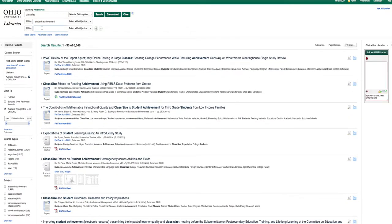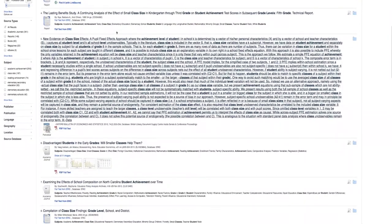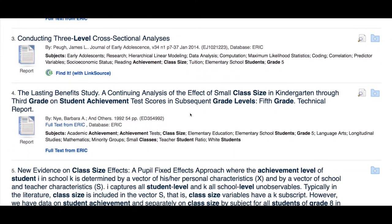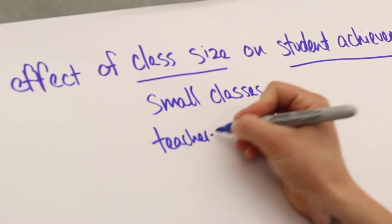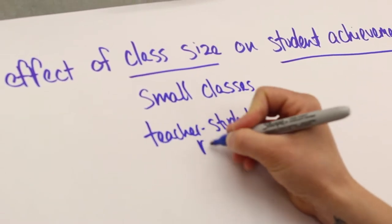This is where developing your vocabulary enters the picture. As you look at the results of this search, you will begin to see that the terms you are searching will occasionally be called something else. For example, class size can be referred to as small classes or teacher-student ratio.